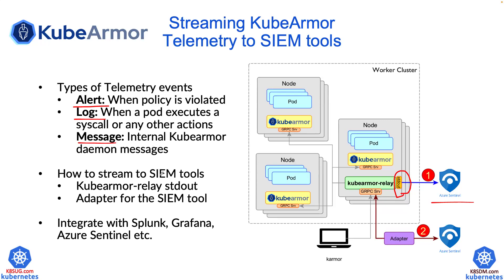There are two ways to stream to a SIEM tool. One is via the KubeArmor relay server, and the other is via an adapter. You can create an adapter to talk to the KubeArmor relay server, collect the messages, and send them to Azure Sentinel, or Splunk, or Grafana, or any other SIEM tools.